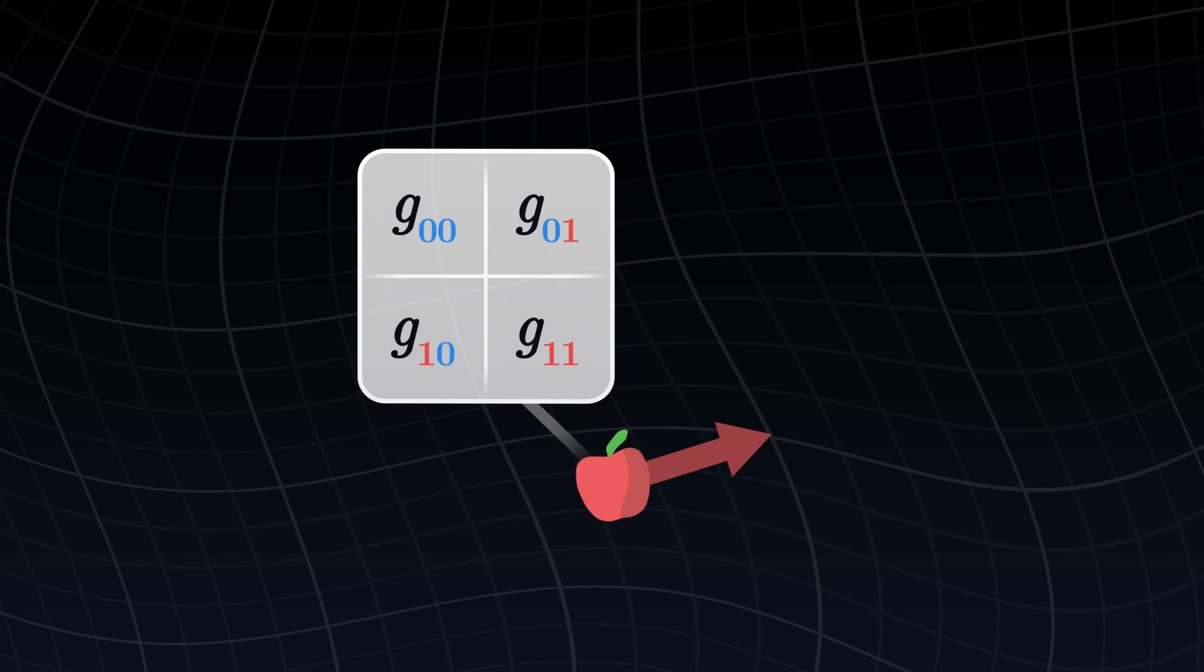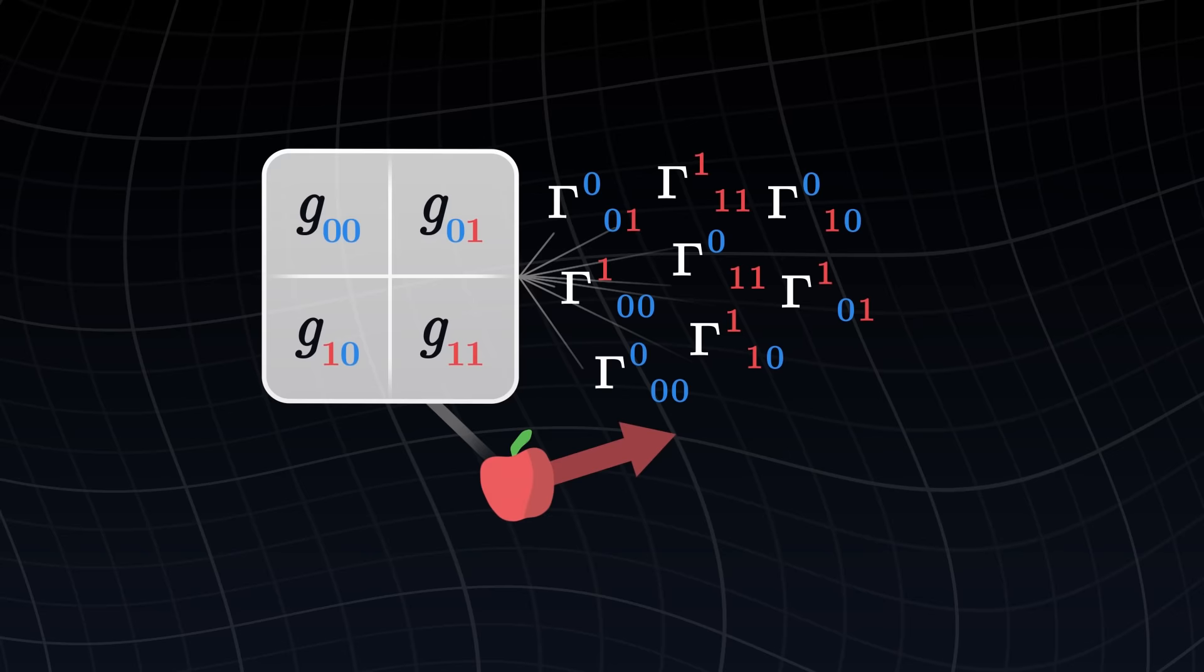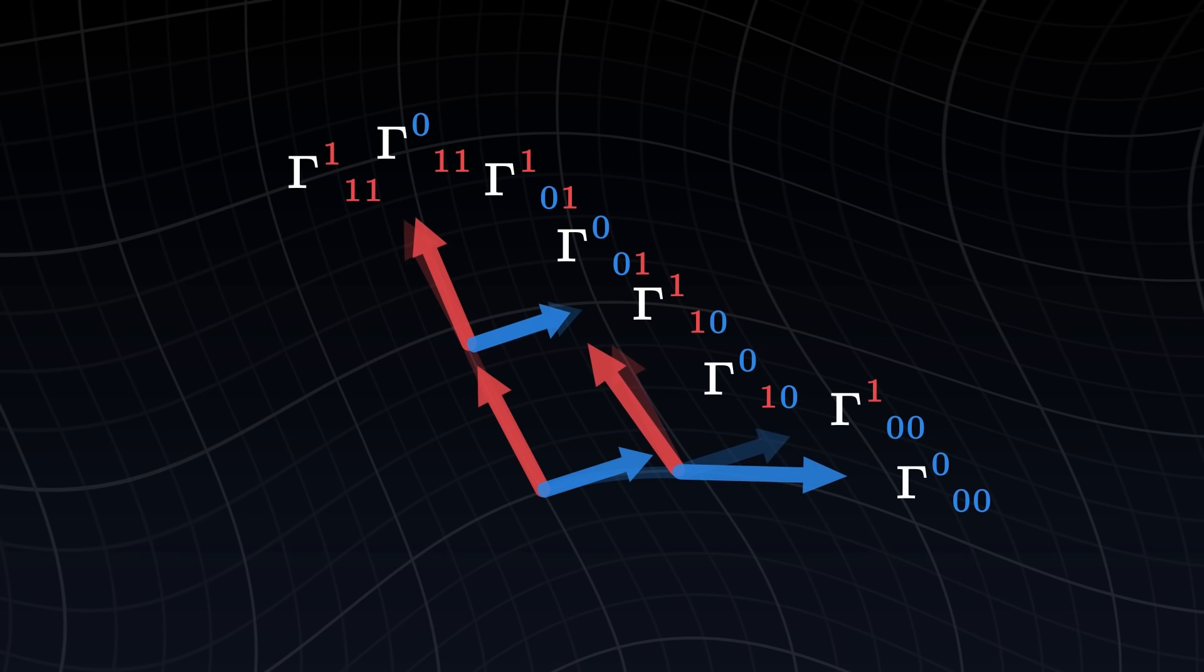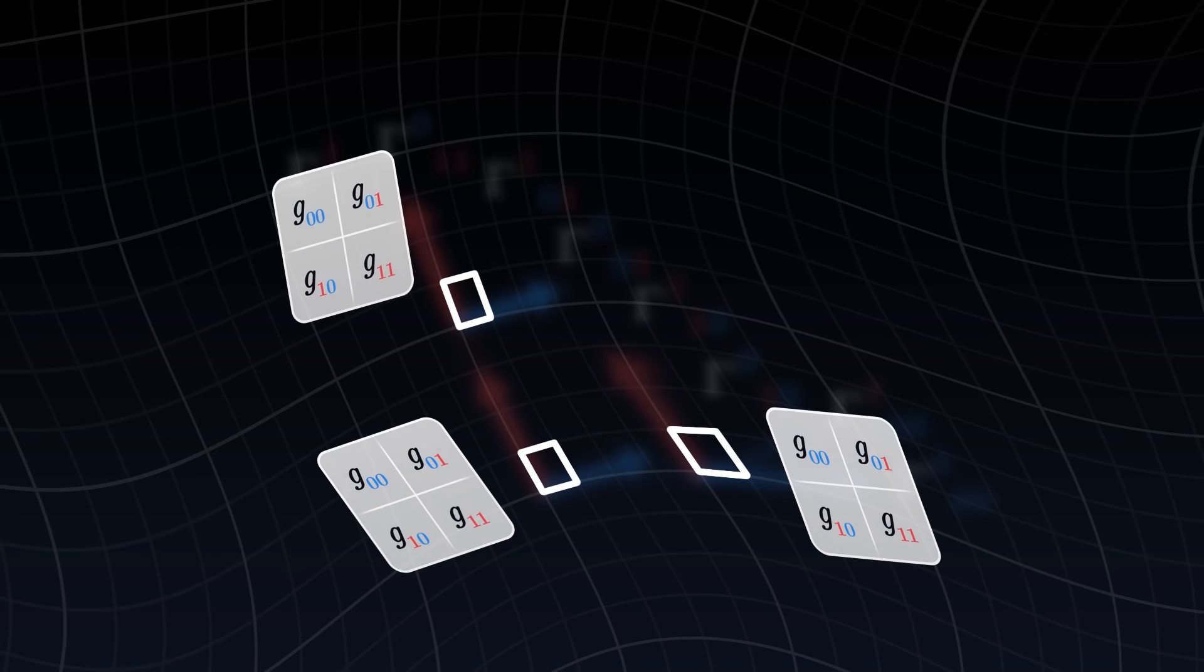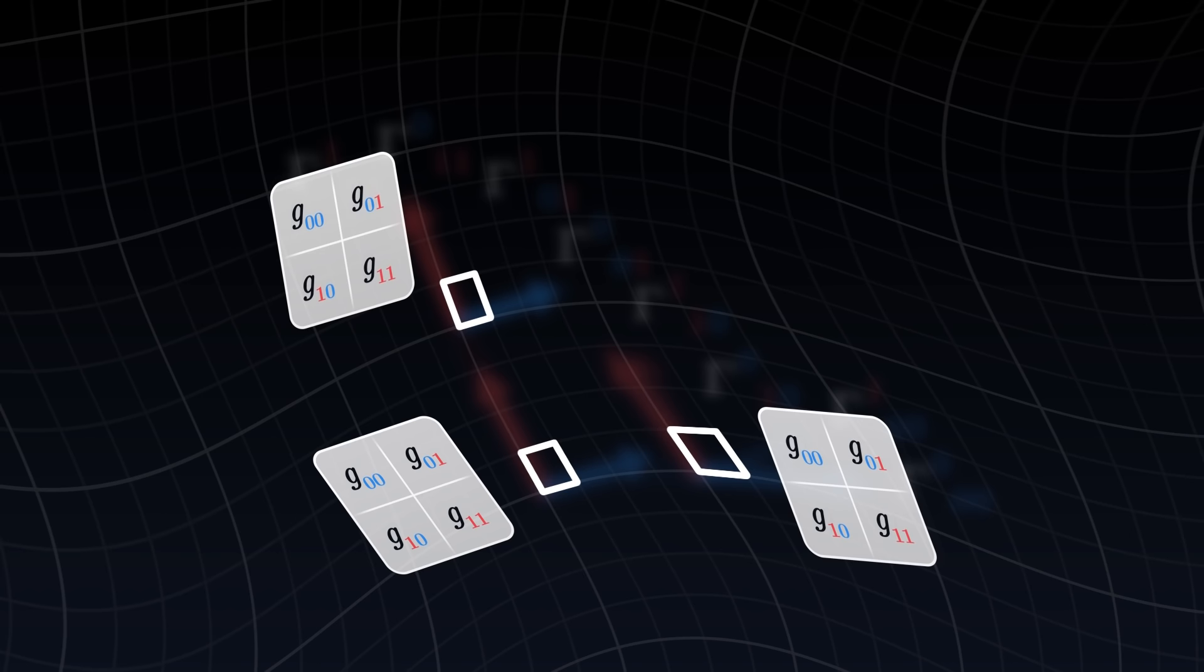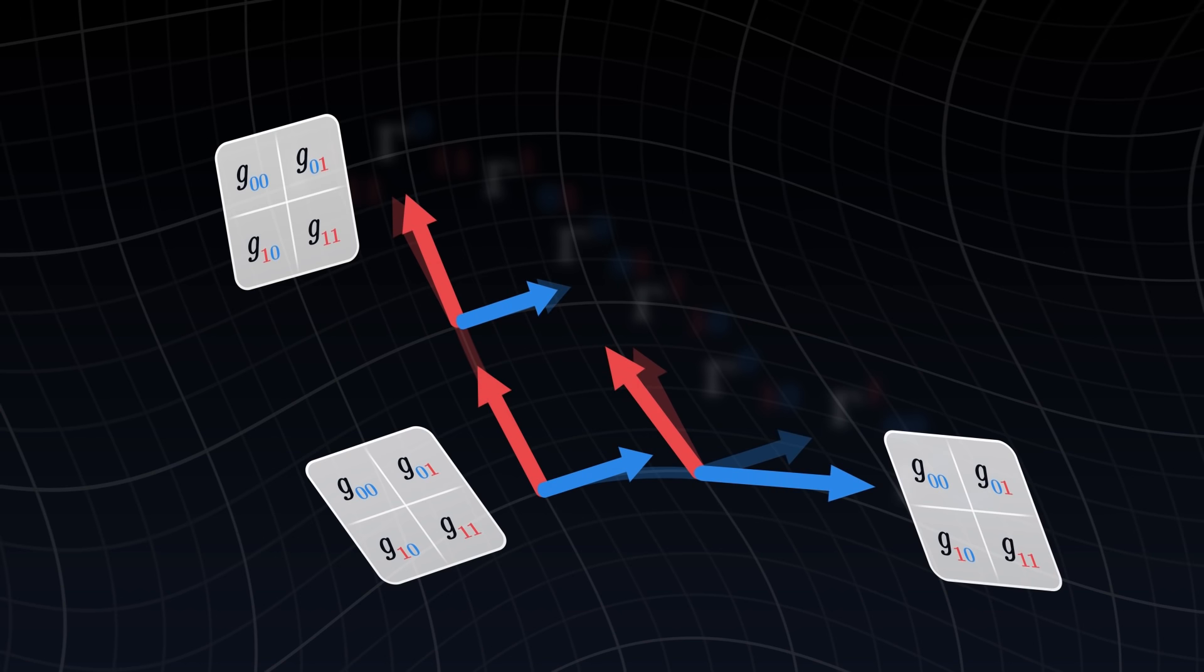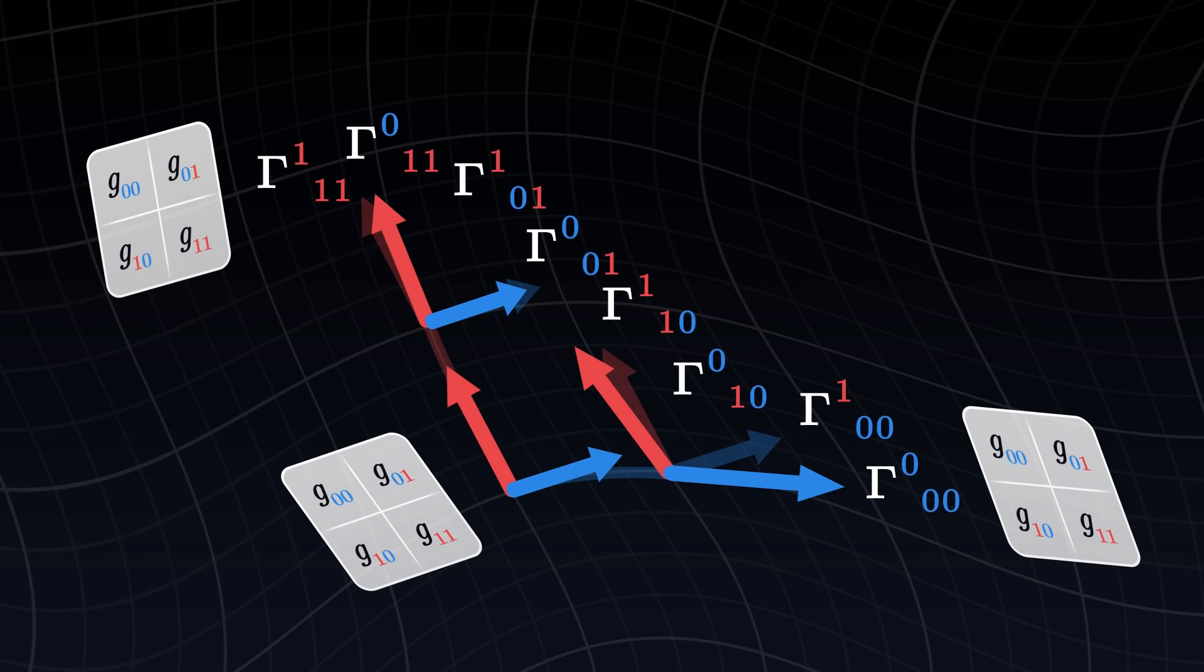It turns out that this object, the metric tensor, will allow us to calculate the Christoffel symbols. Indeed, we previously saw that the Christoffel symbols describe how basis vectors vary along the grid. But the basis vectors are directly related to the shape of the grid. And as we saw, the shape of the grid is expressed through the metric tensor itself. By measuring how the metric tensor varies along the grid, we can thus determine how the basis vectors change, and therefore, the Christoffel symbols.